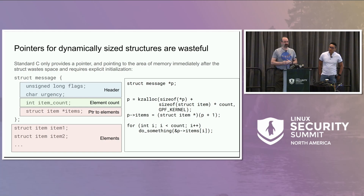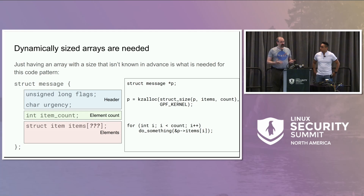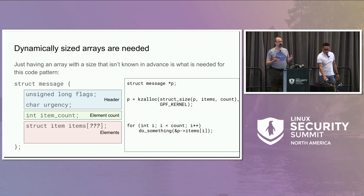What's really wanted is a way to say: I've got an array of these elements, and now the allocation is straightforward. You can iterate them, but what goes in the square braces? This was the problem long ago — C didn't have any solution to this.